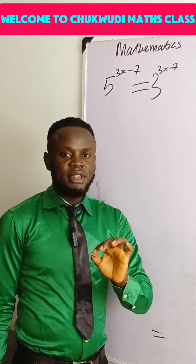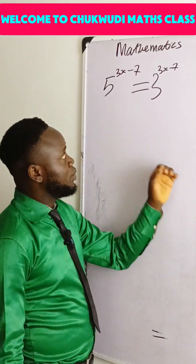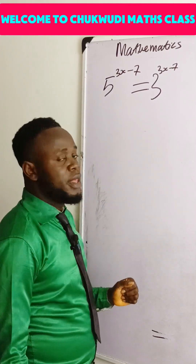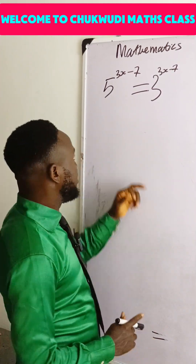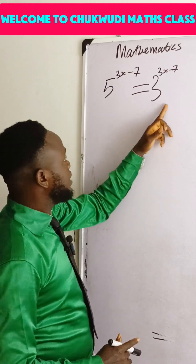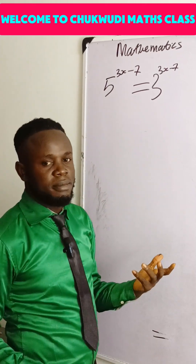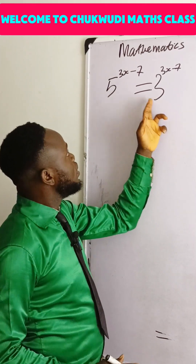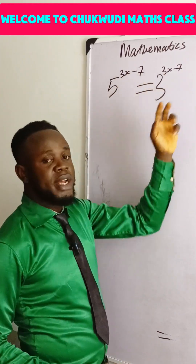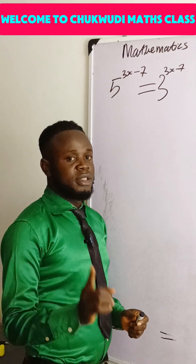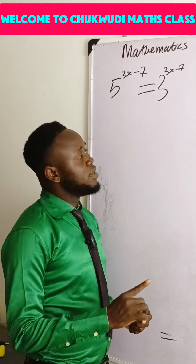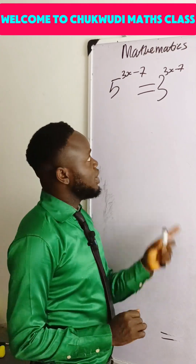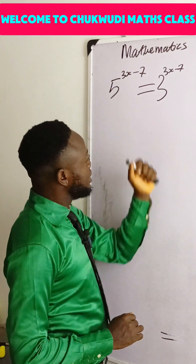Let's look at this question. You can see that the bases are not the same. Assuming we have a common base, we could equate the exponents, but since we don't have that here, we need another approach to find the value of x.